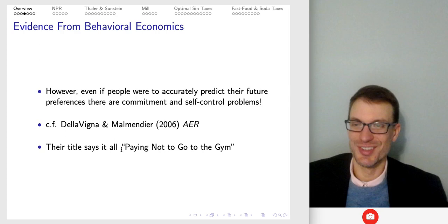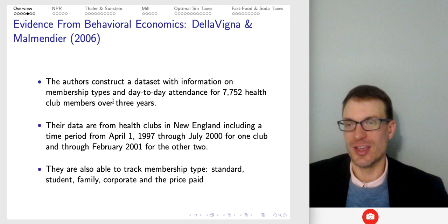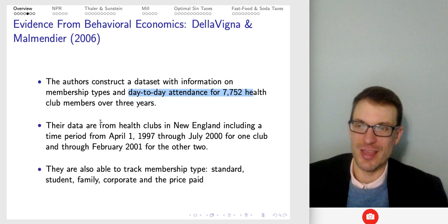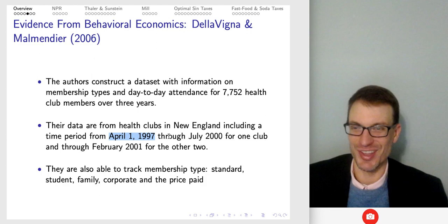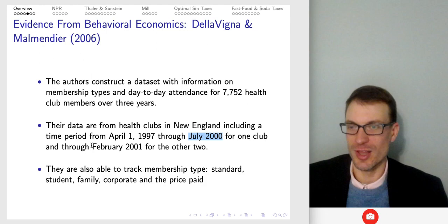The title says it all: 'Paying Not to Go to the Gym.' What they did is construct a dataset with information on membership types and day-to-day attendance for almost 8,000 health club members in New England over three years, for the time period of April 1997 through July 2000 for the first club, and through February 2001 for the second.